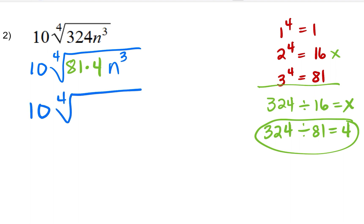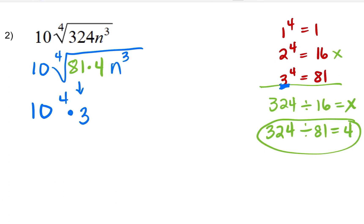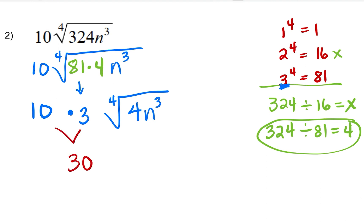So let's simplify. The fourth root of 81 — we already figured that out — is equal to three. So this will equal three. And then the remainders are the fourth root of 4 and n to the third. So what we have is 10 times 3, which is 30, times the fourth root of 4 n to the third.